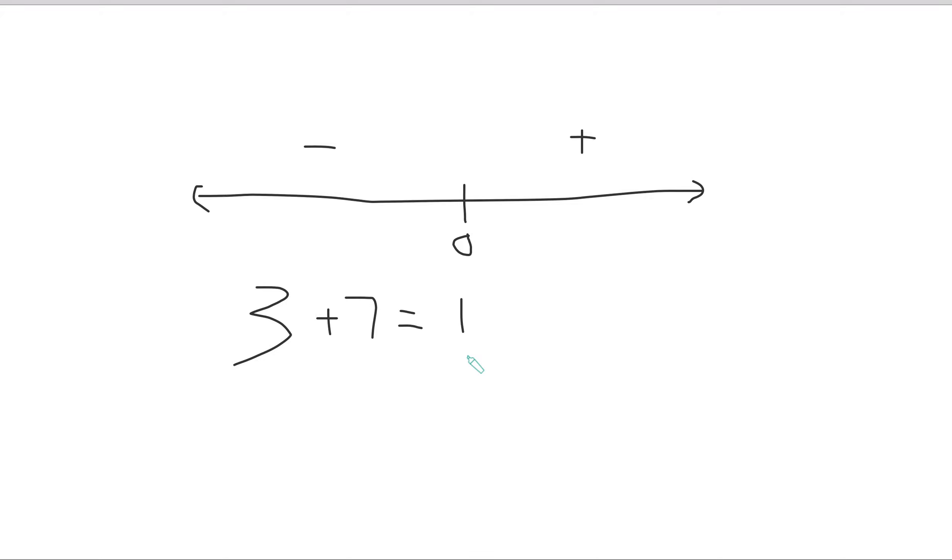Now let's look at 3 - 7. So let's say you're here, you're at positive 3. Now if you're subtracting 7, you've got to go back. Subtract 3 first. Now how many more do you have to subtract?